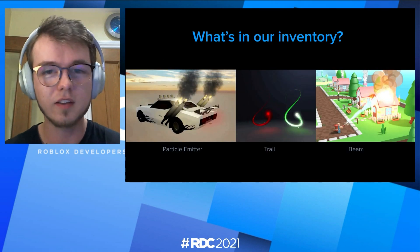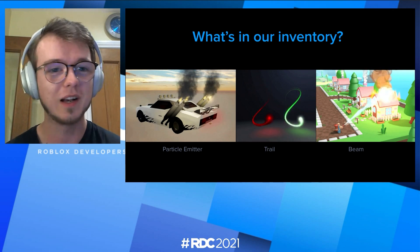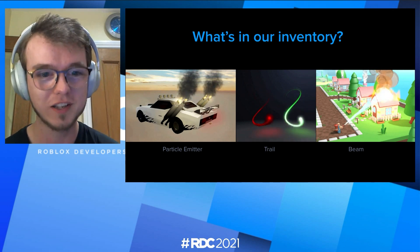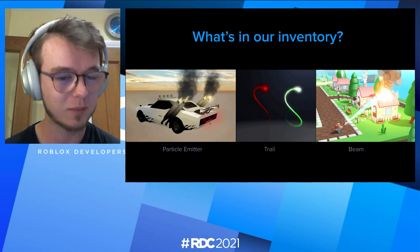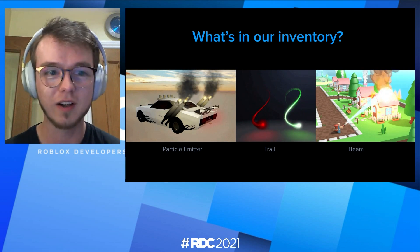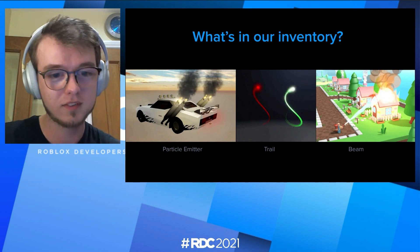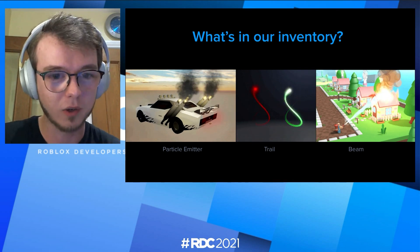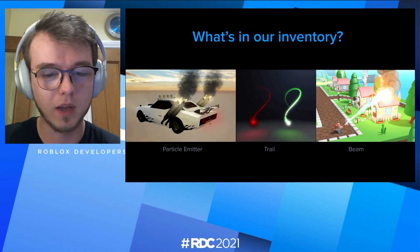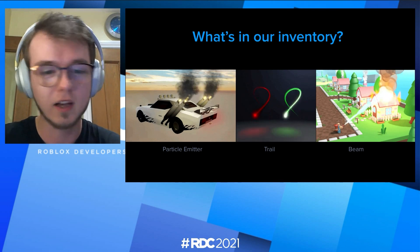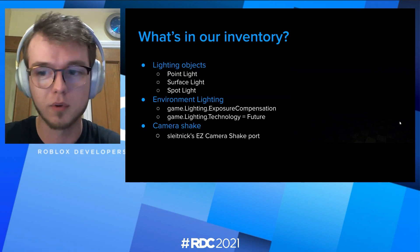So what is in our inventory? We have particle emitters, trails, and beams. Particle emitters are images that are emitted from a point in 3D space. Trails trail behind an object in 3D space. And beams connect an image from two points and allow you to add speed to it as well, which will simulate movement.